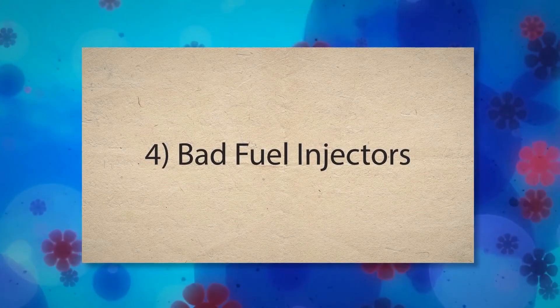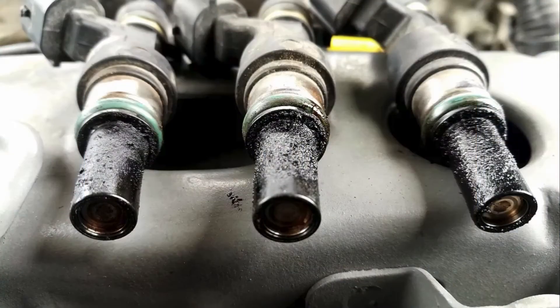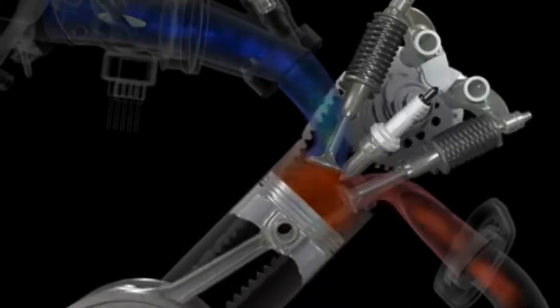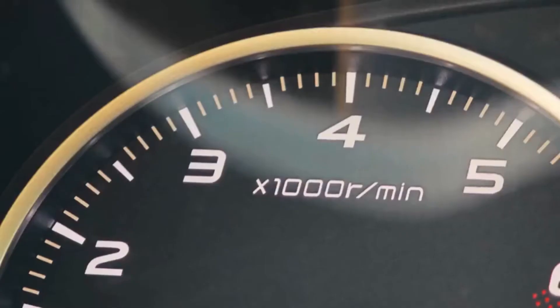Fourth, bad fuel injectors. Dirty or clogged fuel injectors can disrupt the precise fuel spray pattern needed for efficient combustion. This can lead to uneven engine performance and fluctuating RPM.